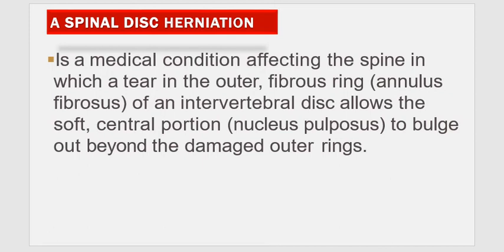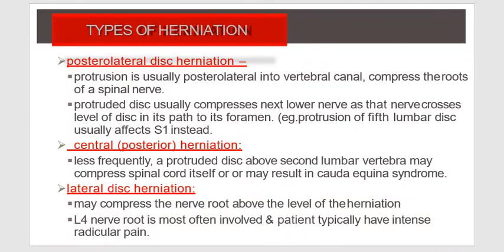A spinal disc herniation is a medical condition affecting the spine in which a tear in the outer fibrous ring — the annulus fibrosus — of the intervertebral disc allows the soft central portion, the nucleus pulposus, to bulge out beyond the damaged outer ring.